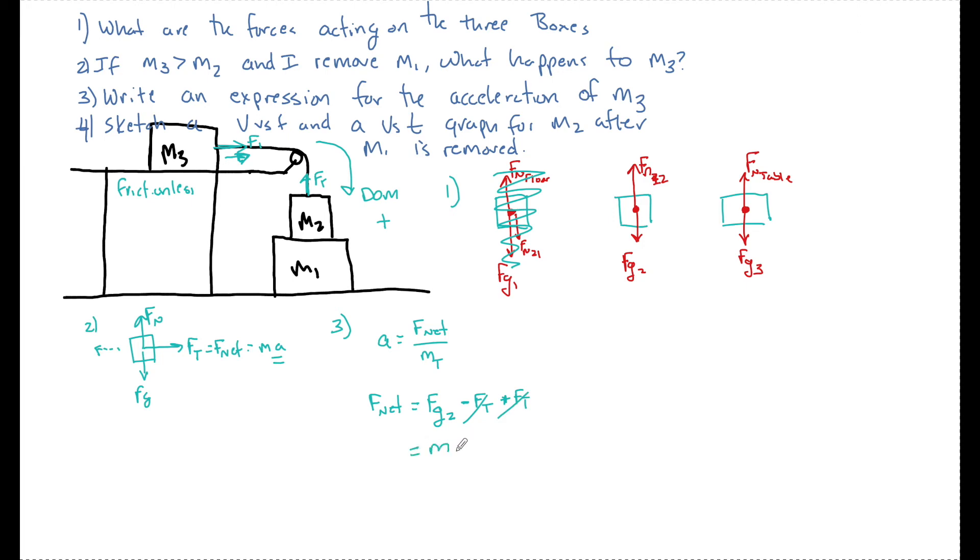And I can clean this up a little bit and I can get rid of these two. They're going to cancel each other out. And then we just say that's M2G. So if I want to find the acceleration of this system, it's going to be M2G divided by mass total, which is just going to be M2 plus M3.